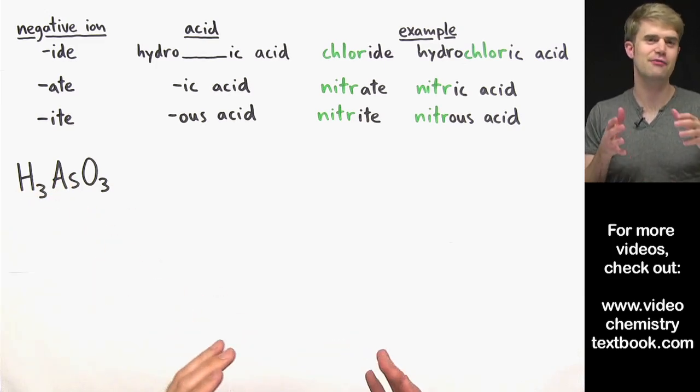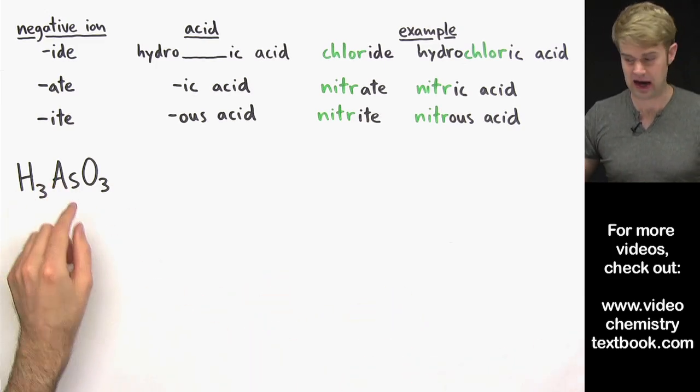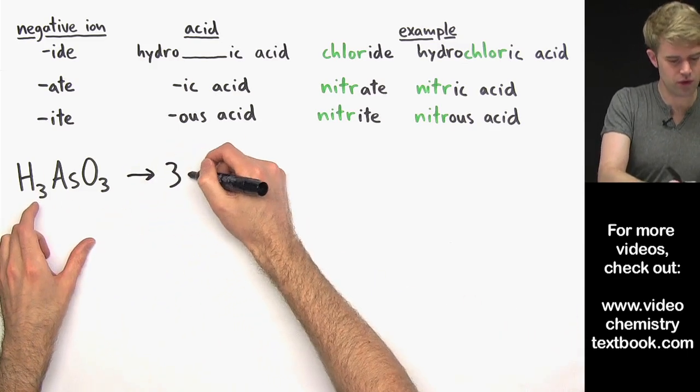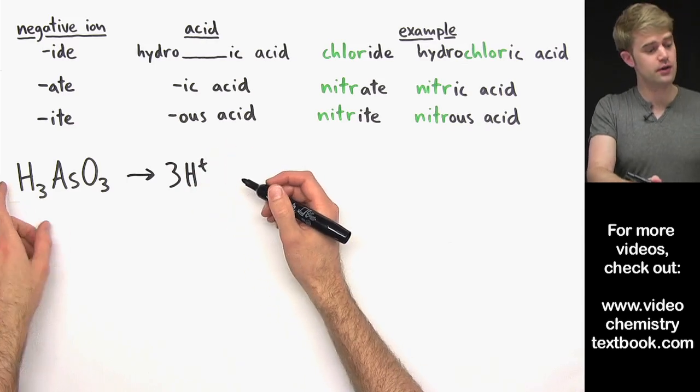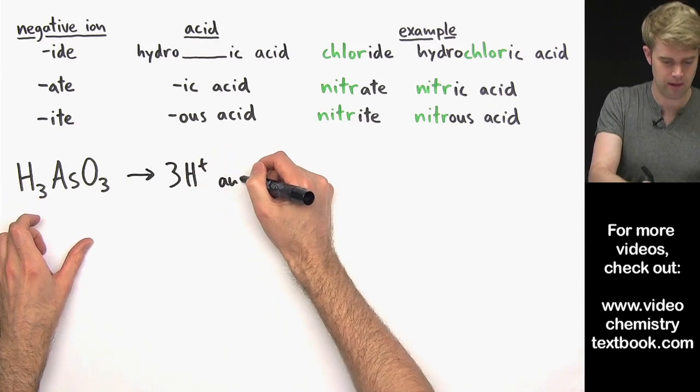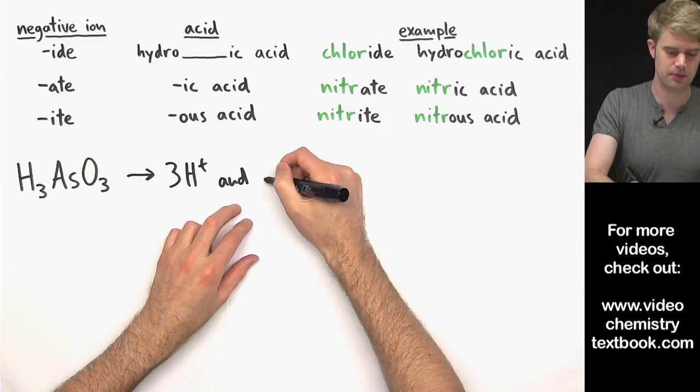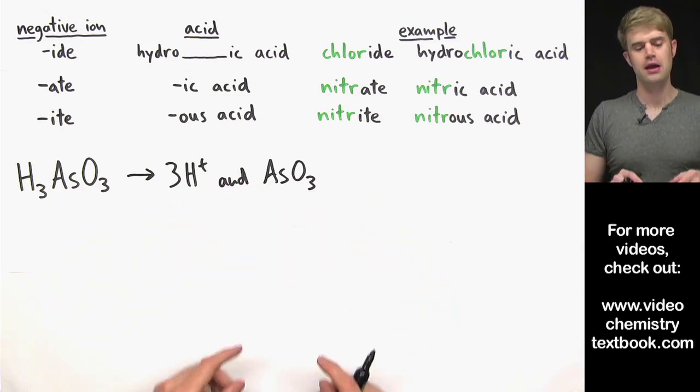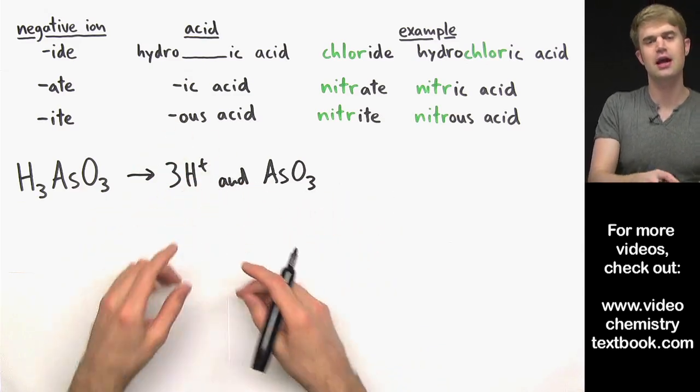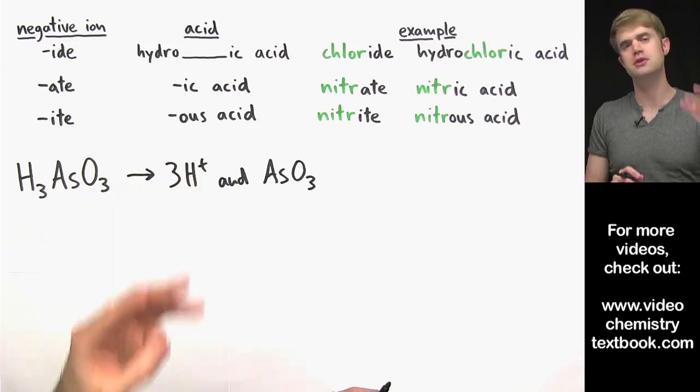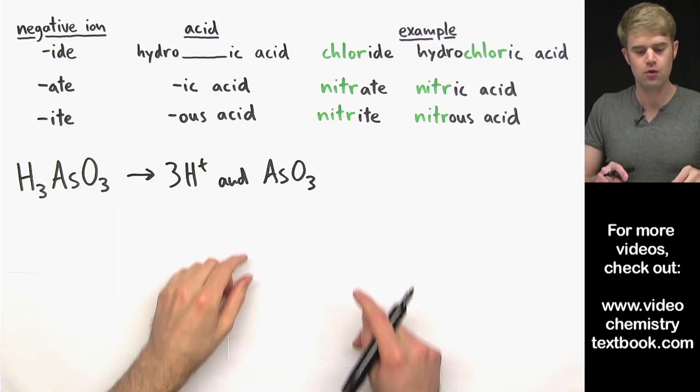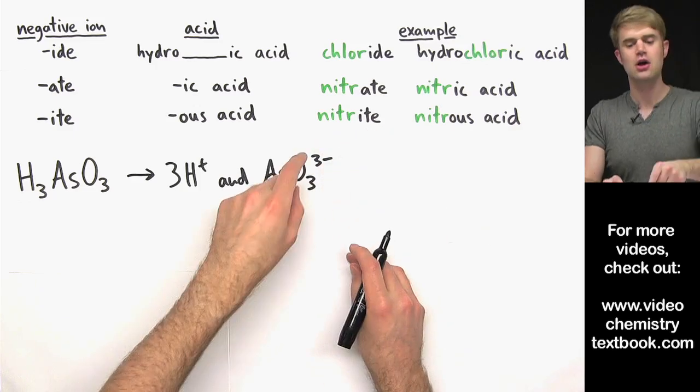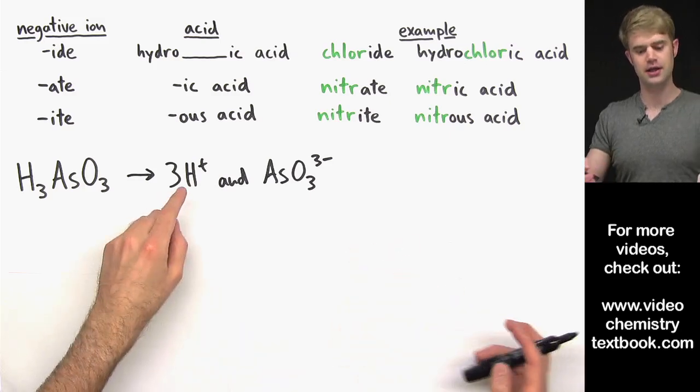H3AsO3. To name this acid, I've got to figure out the name of the negative ion that's in it. So I'm going to break it apart into its pieces. The first of these is going to be three H+. I know that it's going to be three because I have H3 here. So that's the first part and then the negative ion part is going to be everything else. It's going to be AsO3. Now what's the charge on this ion going to be? It's got to balance out the charge from my H+. I have three of these H+, which means I have three plus total of charge, which means that the charge on this polyatomic ion has to be three minus.